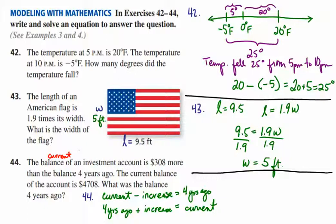So let's take a look at some ways that that might work. The current is 4708, and we know that the increase was 308. So if we subtract 308, we're going to end up with a balance of $4,400, which would be four years ago.